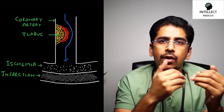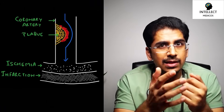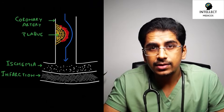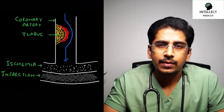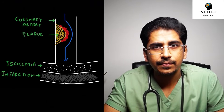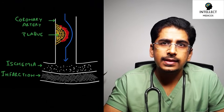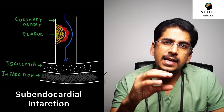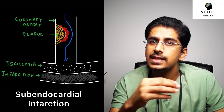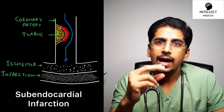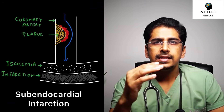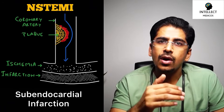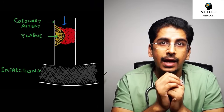If the plaque partially occludes the coronary artery, further impairment of blood flow causes ischemia and some infarction — death of tissue. Necrosis causes release of troponins, which are cardiac biomarkers and contractile proteins. This results in sub-endocardial infarction — not full thickness — and typically causes ST depression or T wave inversion on ECG. This entity is called NSTEMI, or non-ST elevation MI.